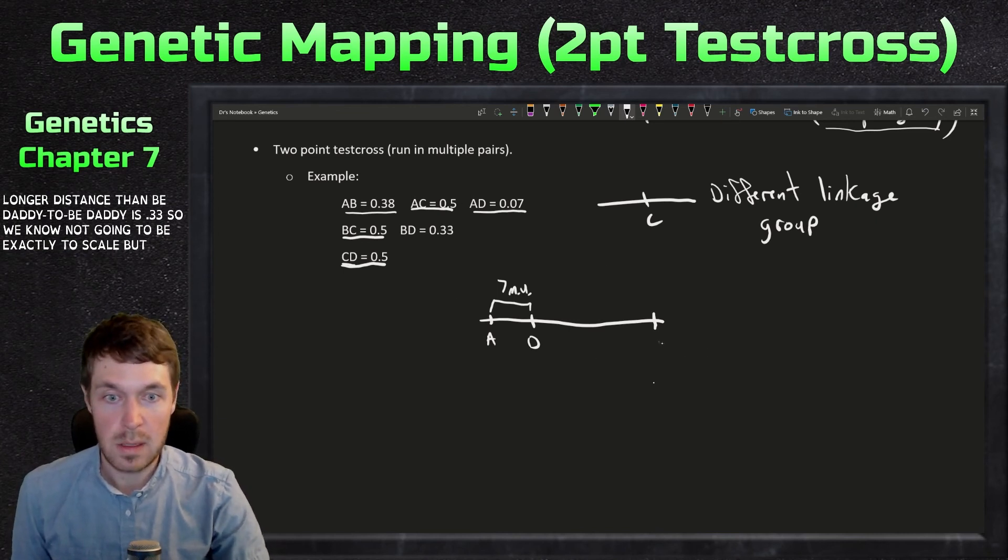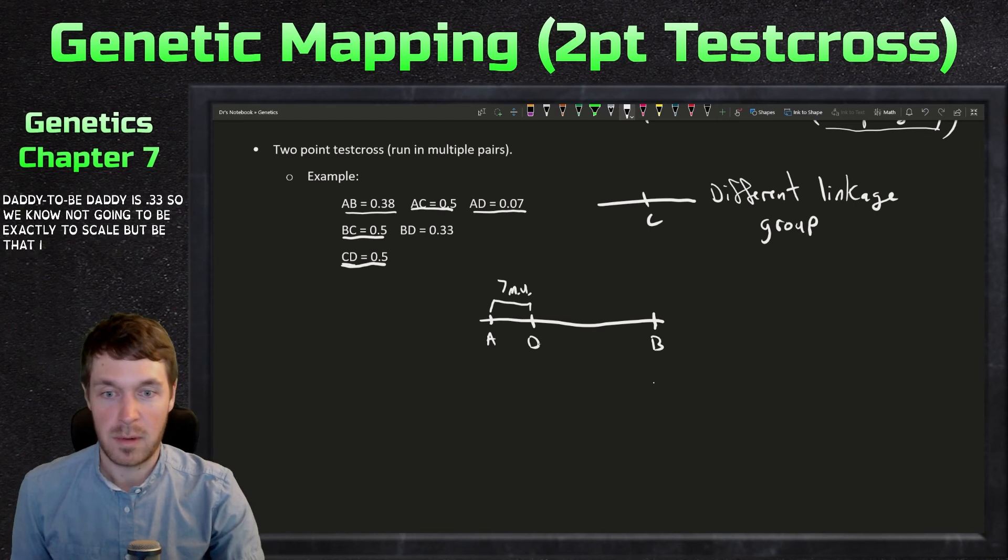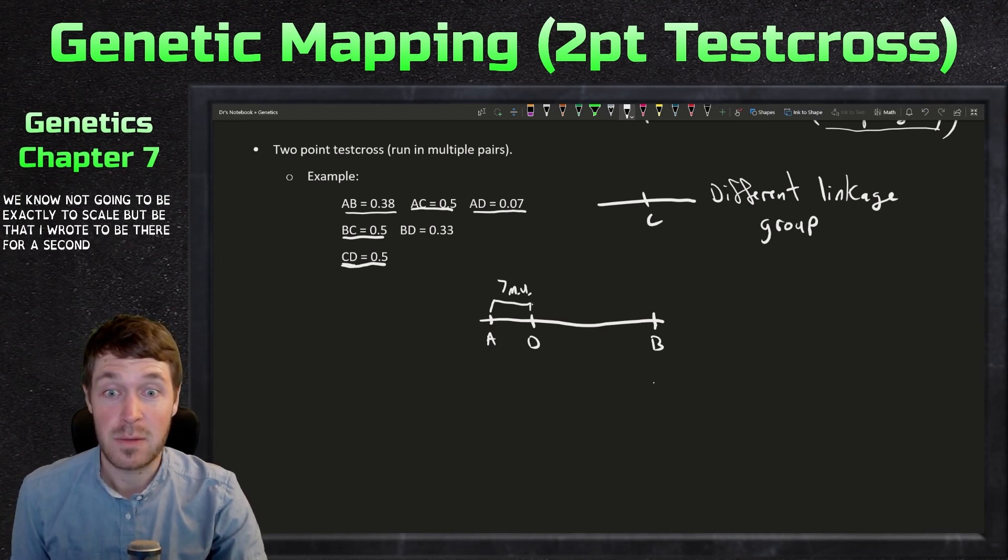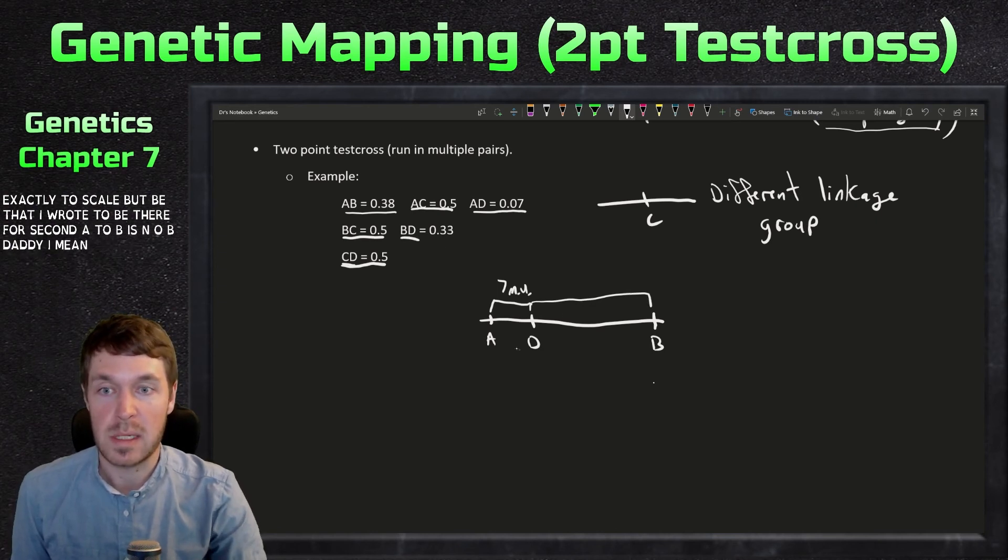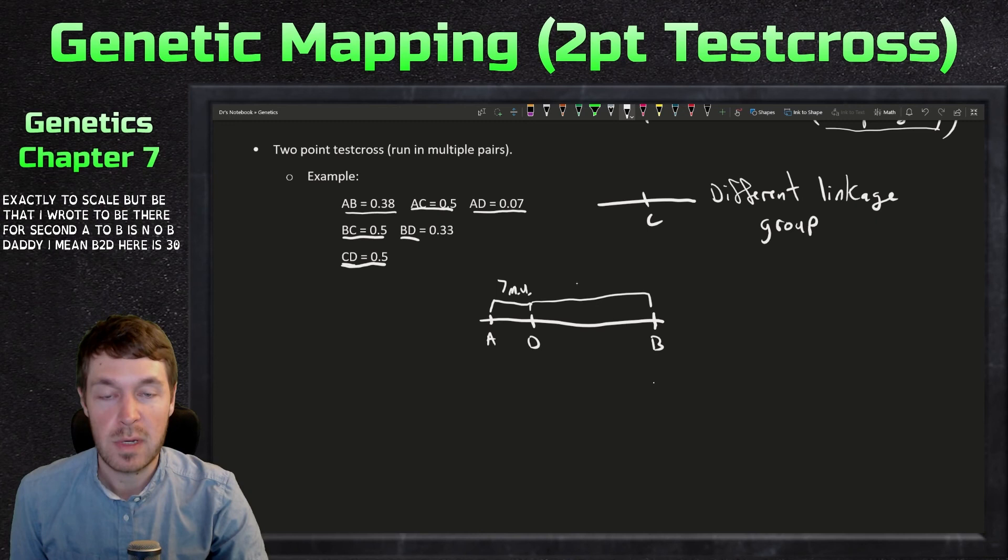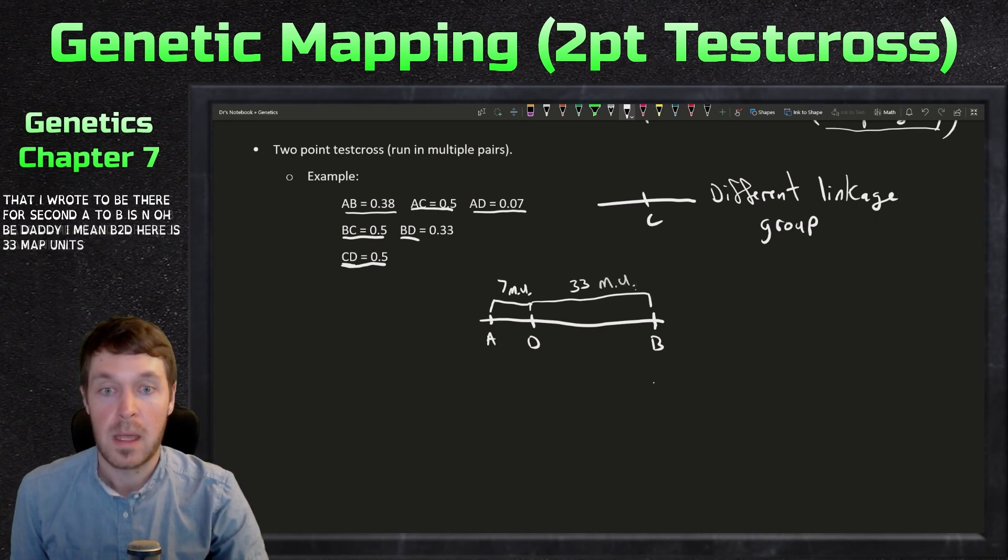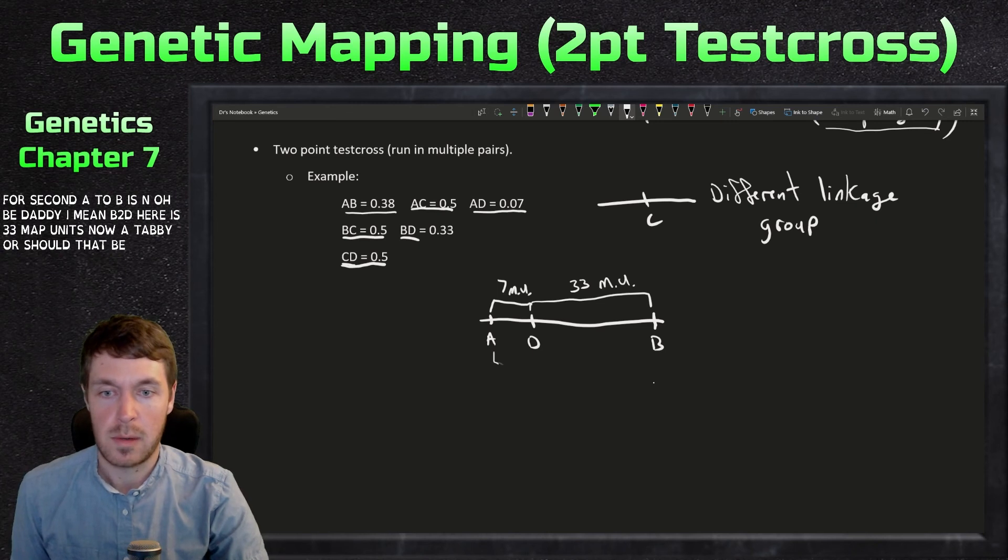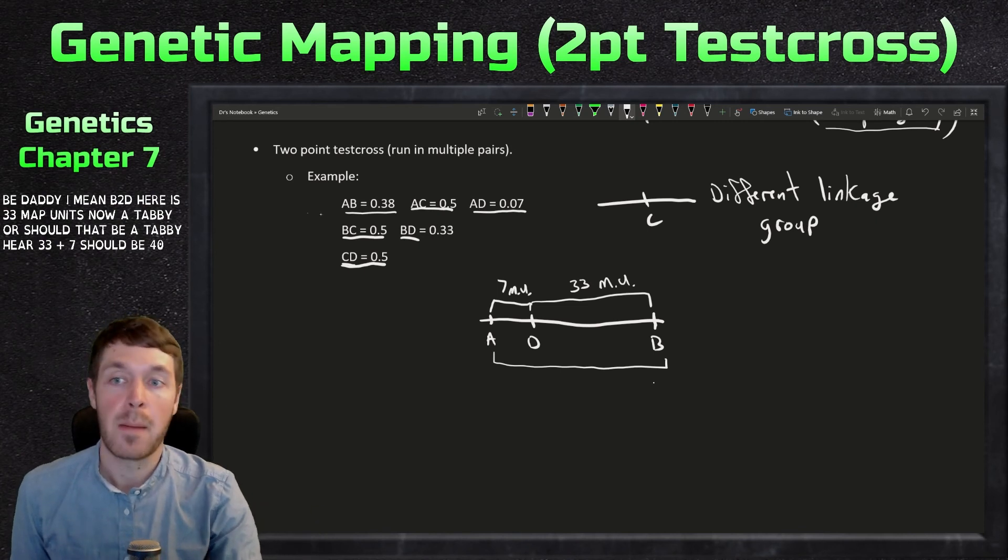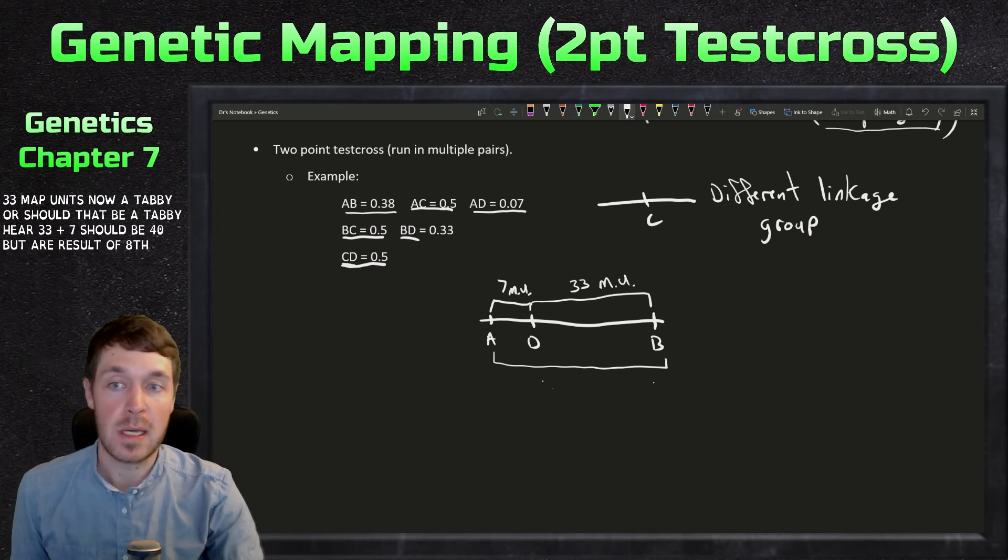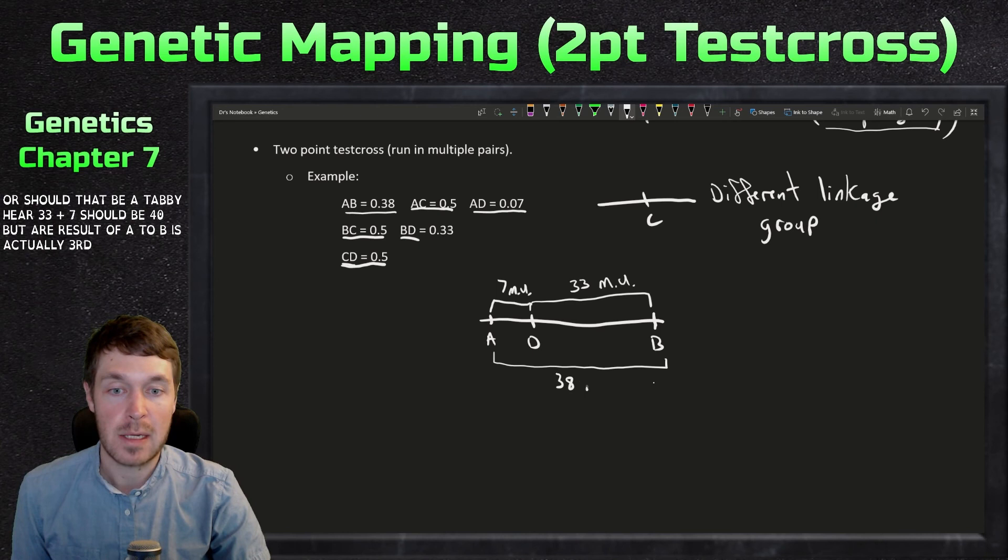So we know it's not going to be exactly to scale. But B—I thought I wrote a B there for a second. A to B is then, well, B to D, I mean B to D here, is 33 map units. Now A to B, what should that be? A to B here, 33 plus 7 should be 40. But our result of A to B is actually 38 map units.